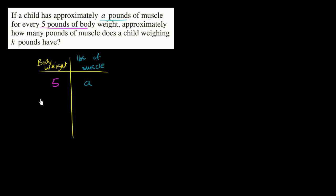Now what about 10 pounds of body weight? Well, now you're going to have 2a pounds of muscle. And how did we get 2a here? This is the same thing as 10 divided by five, times a.